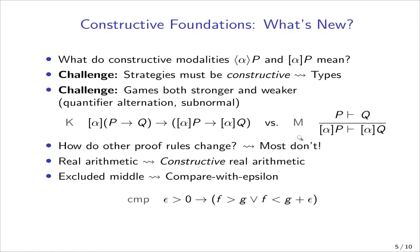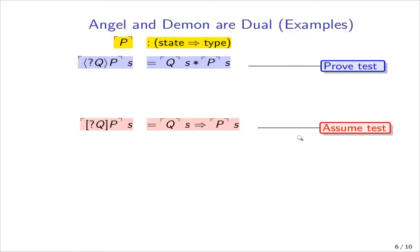We also lose the excluded middle. This is important because we need a case analysis rule any time that we are inspecting the state in a proof. Recall from our example that I might want to check how far I am from the car in front of me. We can do this, but we need to use a comparison with epsilon. I can't tell you if f and g are exactly the same. I can tell you if they are within some distance epsilon. Now let's take a look at the definition of the semantics.